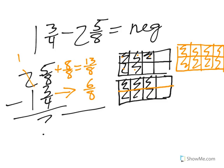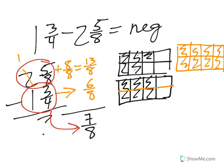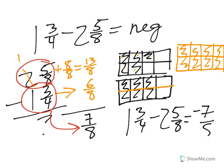And 13 minus 6, 13 take away 6, leaves me with 7 eighths. And 1 from 1 is nothing. So the difference between 2 and 5 eighths and 1 and 3 fourths is 7 eighths. So now I know the answer to 1 and 3 fourths minus 2 and 5 eighths. It's negative 7 eighths.